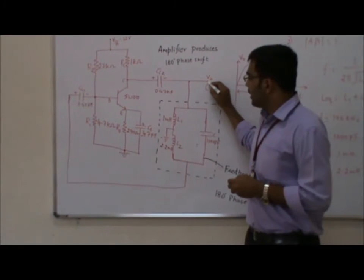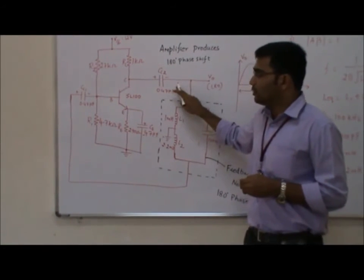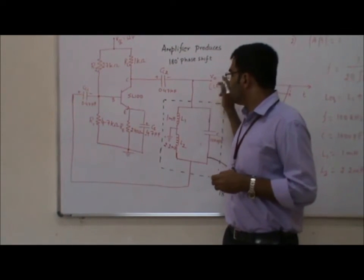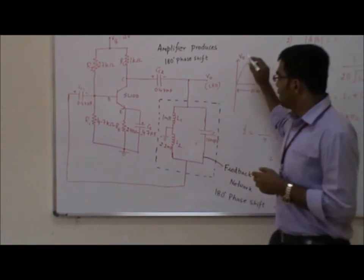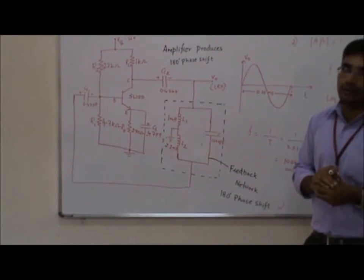The output from the collector terminal is connected through coupling capacitors CC1 and CC2. The output is observed using a CRO, and at this point we obtain a pure sine wave with a frequency of 100 kilohertz.